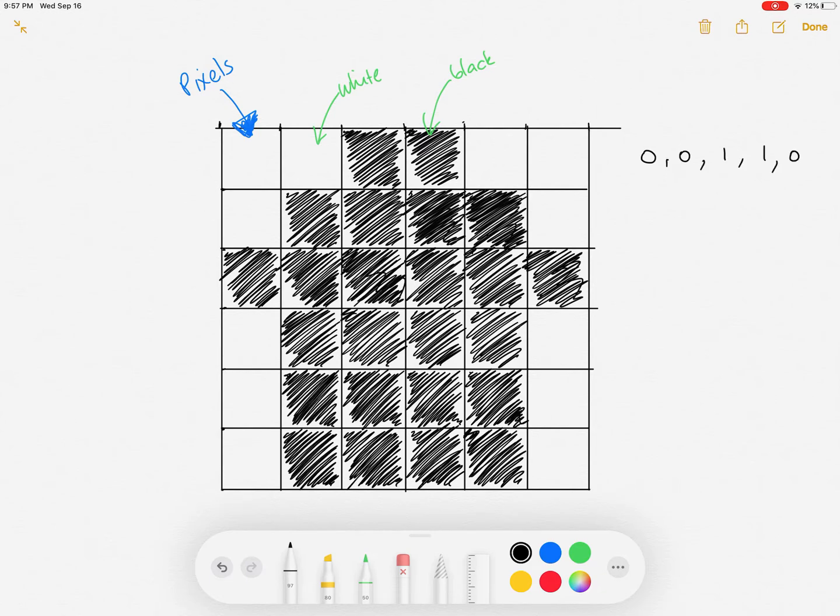So if I was going to represent the first row in my picture, I would write zero because the first one's white, zero, one, one, zero, zero. Now it doesn't really make any difference if I use zero for white and one for black or the other way around.